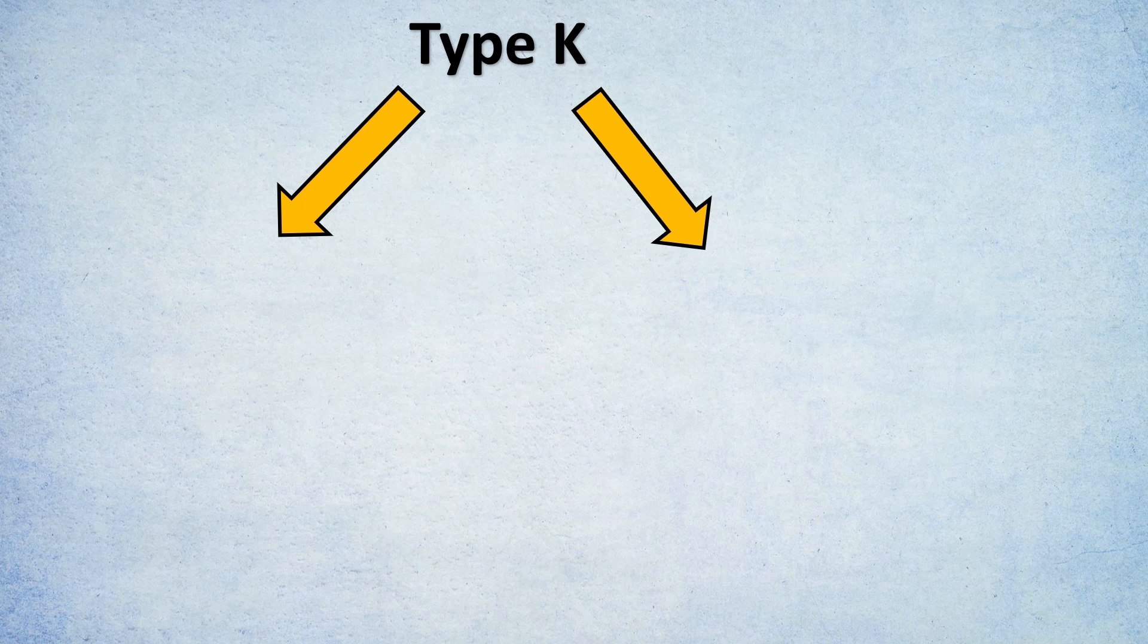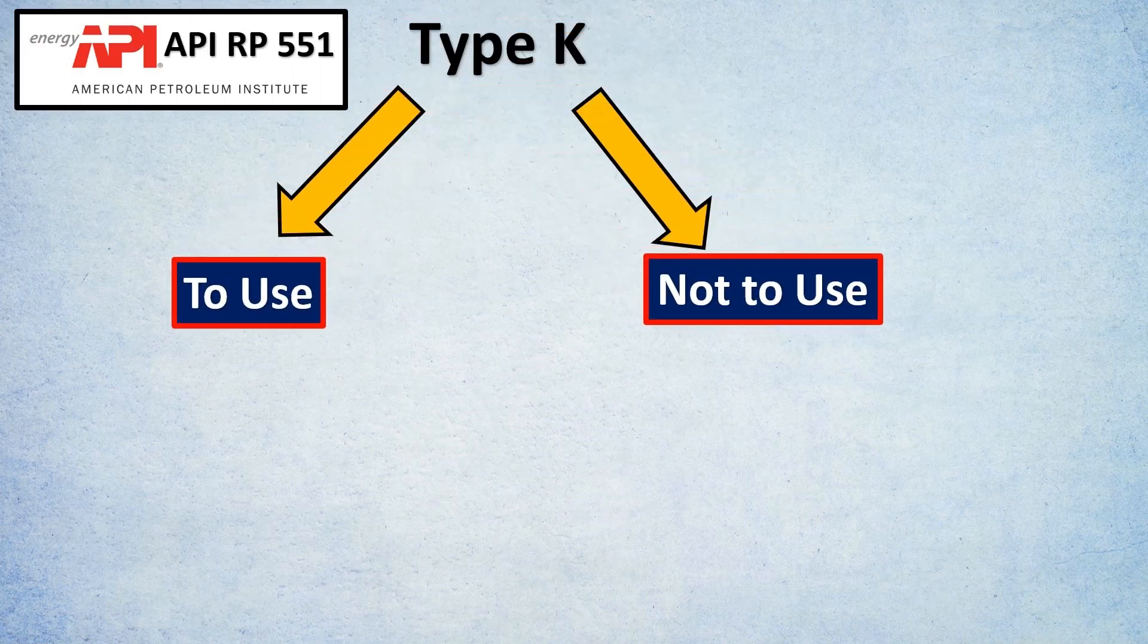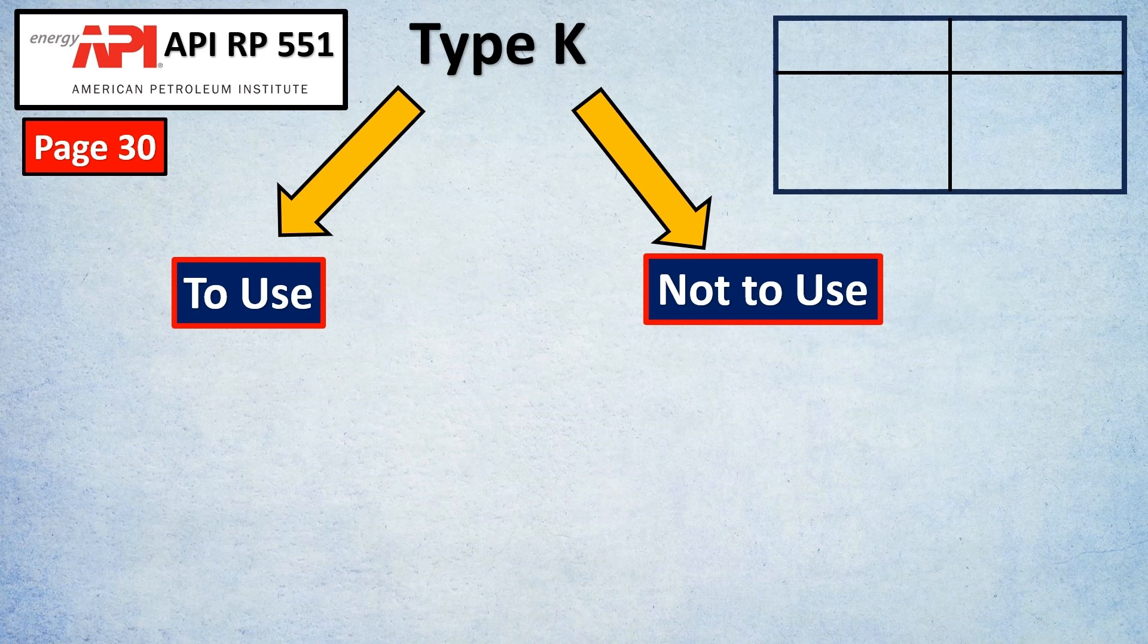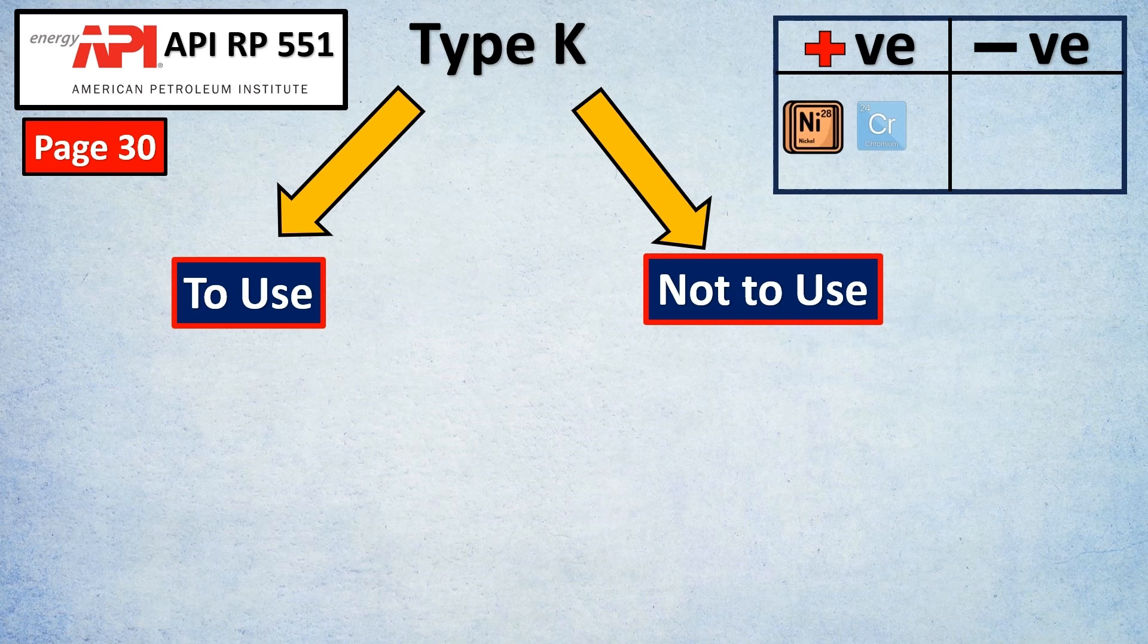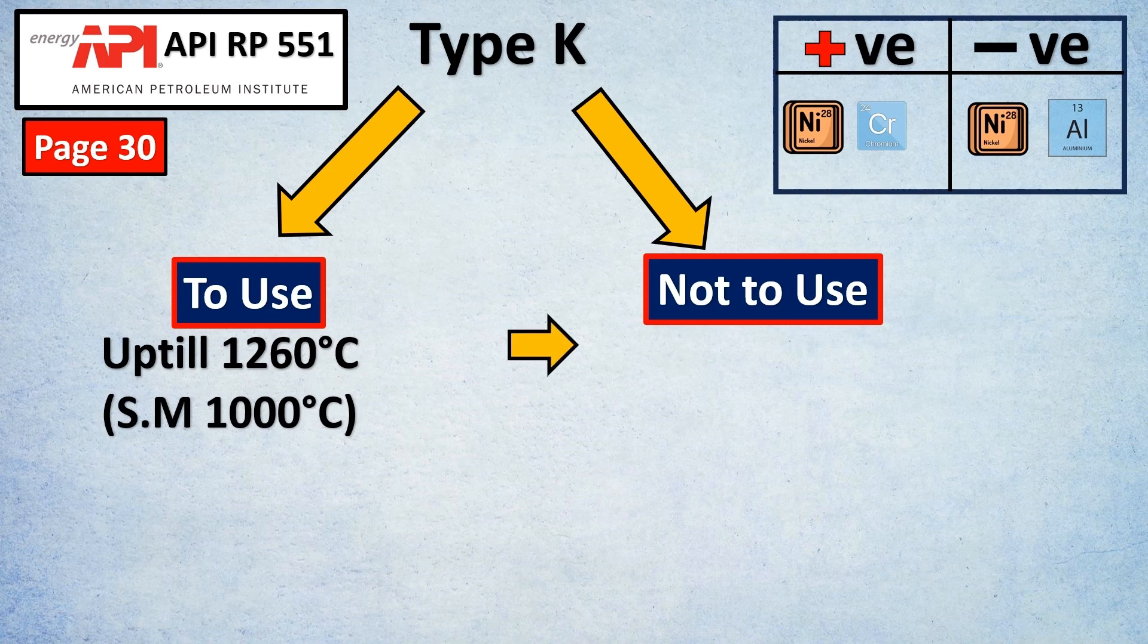The first thing is type K thermocouples. Type K are the most widely used thermocouple. So we will look at when to use and when not to use these thermocouples as per API RP 551 page number 30. So first thing is before we start with K type, let us know what is K type made up of. So K type has the positive side and the negative to it. So the positive is made up of Nickel and Chromium and the negative is made up of Nickel and Aluminium to it. This can usually be used up till 1260 degree Celsius. As a safety margin you can say 1000 degree Celsius is what I personally recommend.